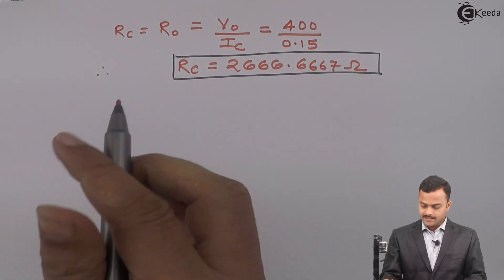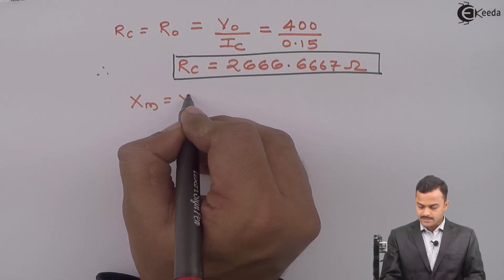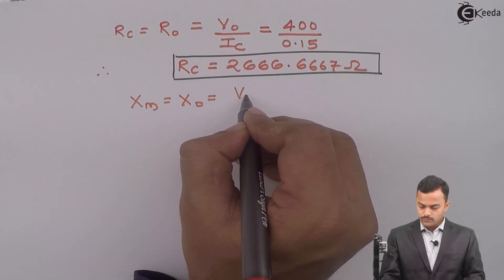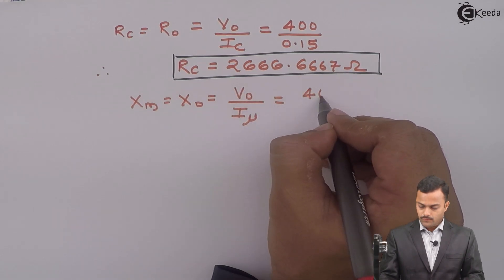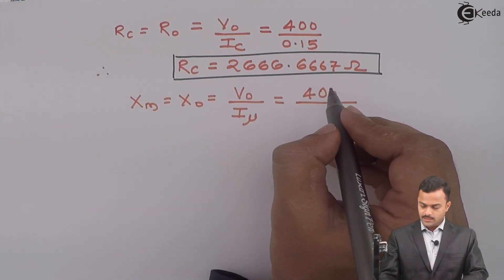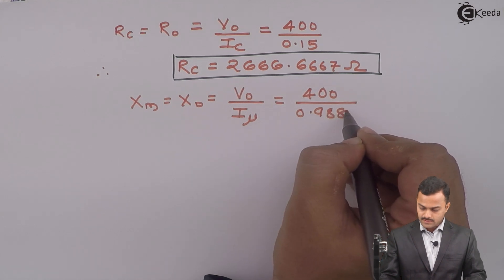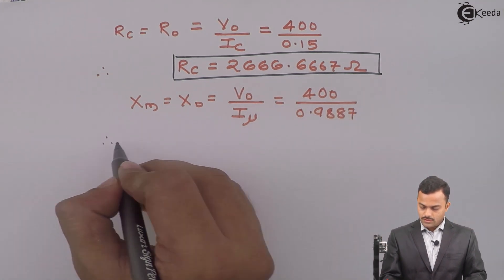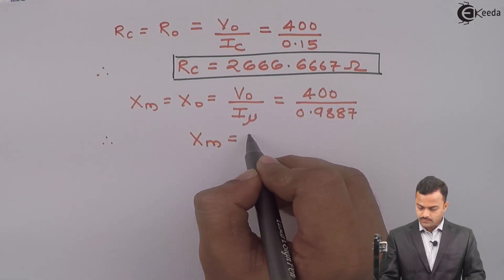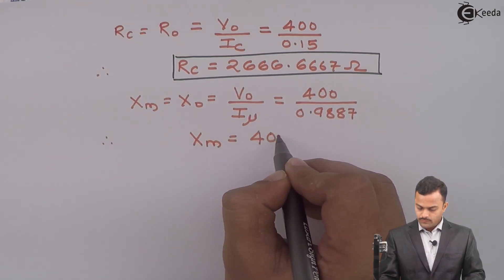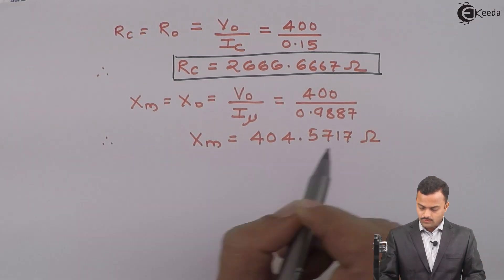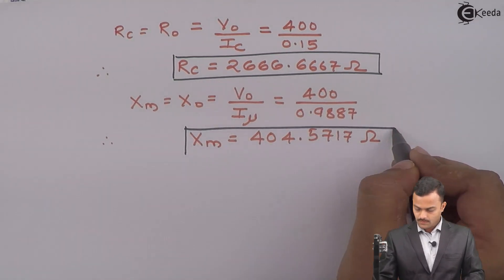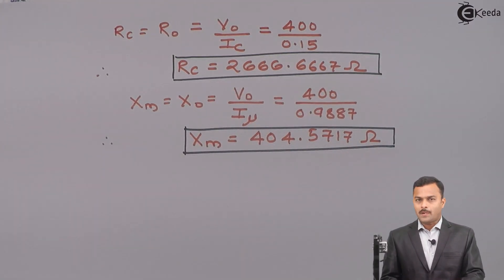Similarly, I can get XM magnetizing reactance same as X0 equal to V0 upon Iμ. So, it is equal to 400 divided by 0.9887. So, if we solve you will get XM or X0 equal to 404.5717 ohm. So, we got no load parameters. Let us proceed further.